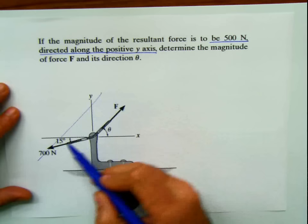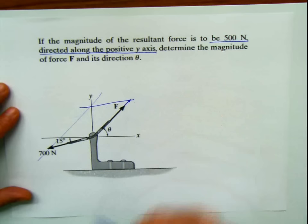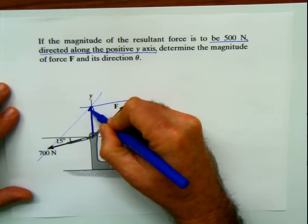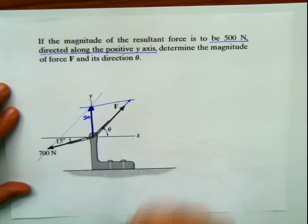If we're going to do the parallelogram law, what we have to do is build a parallelogram here. This side is going to be parallel to the force, and the other one parallel in the other direction. The resultant force has to be here — from here to here. And the value for this resultant force is 500 Newtons.